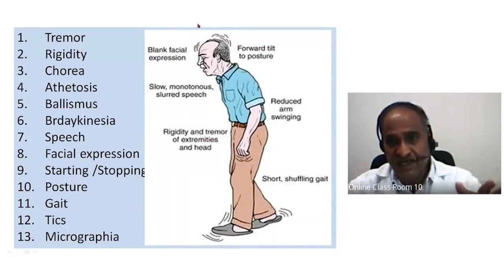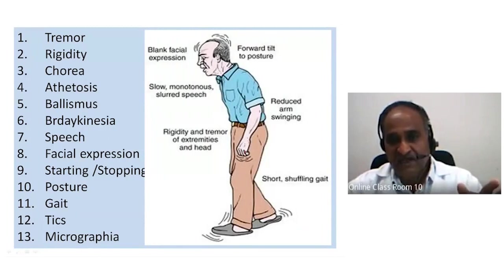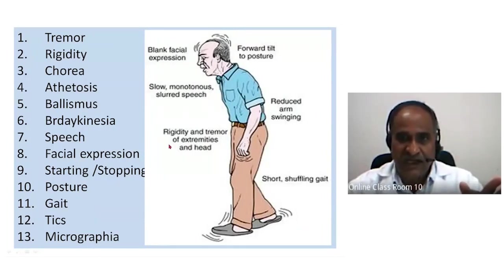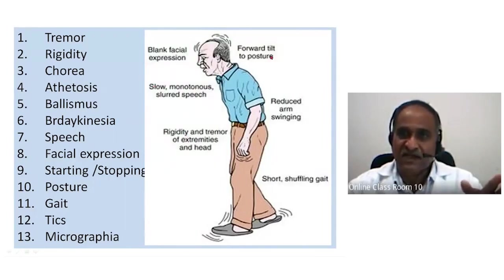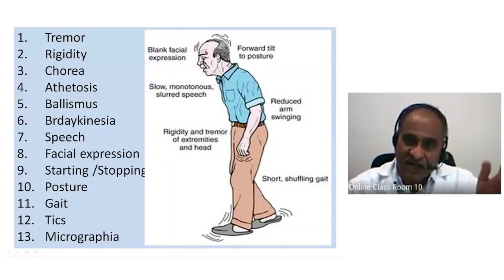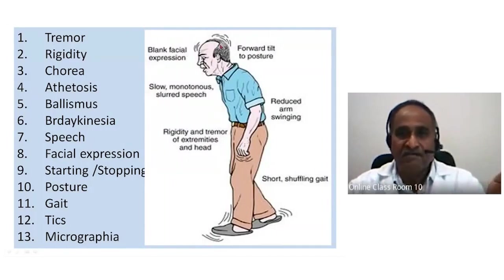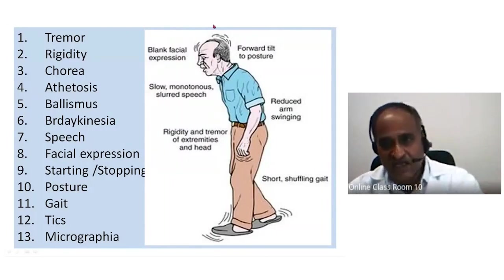This is a classical Parkinsonian patient — you can see the short shuffling gait, reduced arm swinging, rigidity, tremor, slow monotonous slurred speech, flexion attitude, and blank facial expressions.